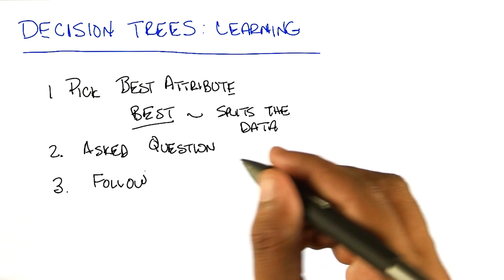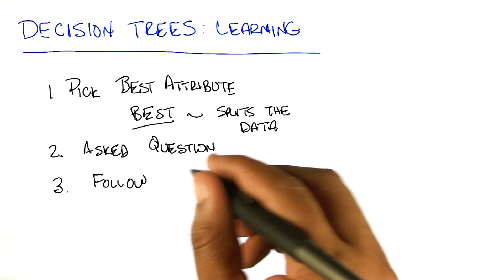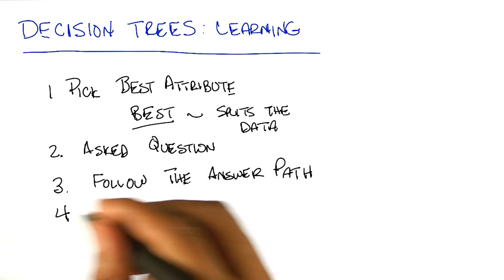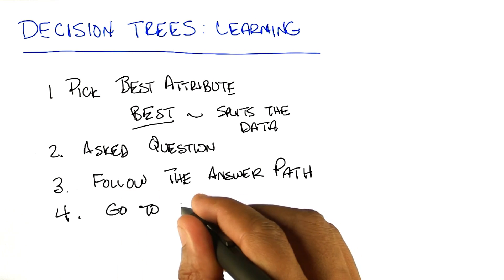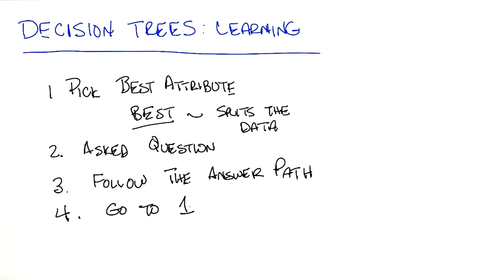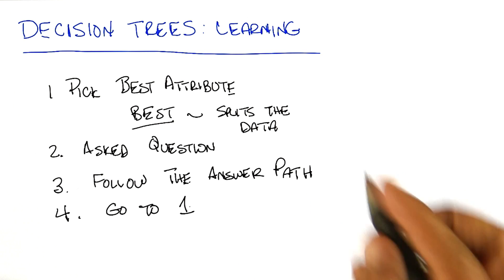So we think about decision trees, a way of talking about that is that you follow the path of the answer, and then lather, rinse, and repeat. You went back and picked the best attribute, asked a question, followed the answer path, so on and so on, and you kept doing that until what?